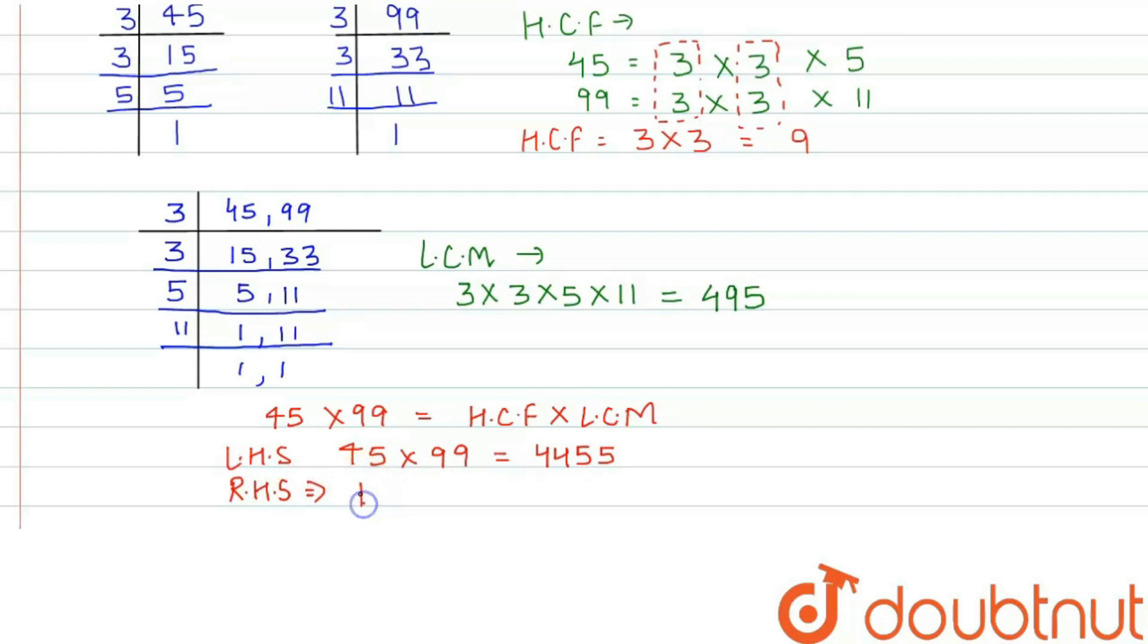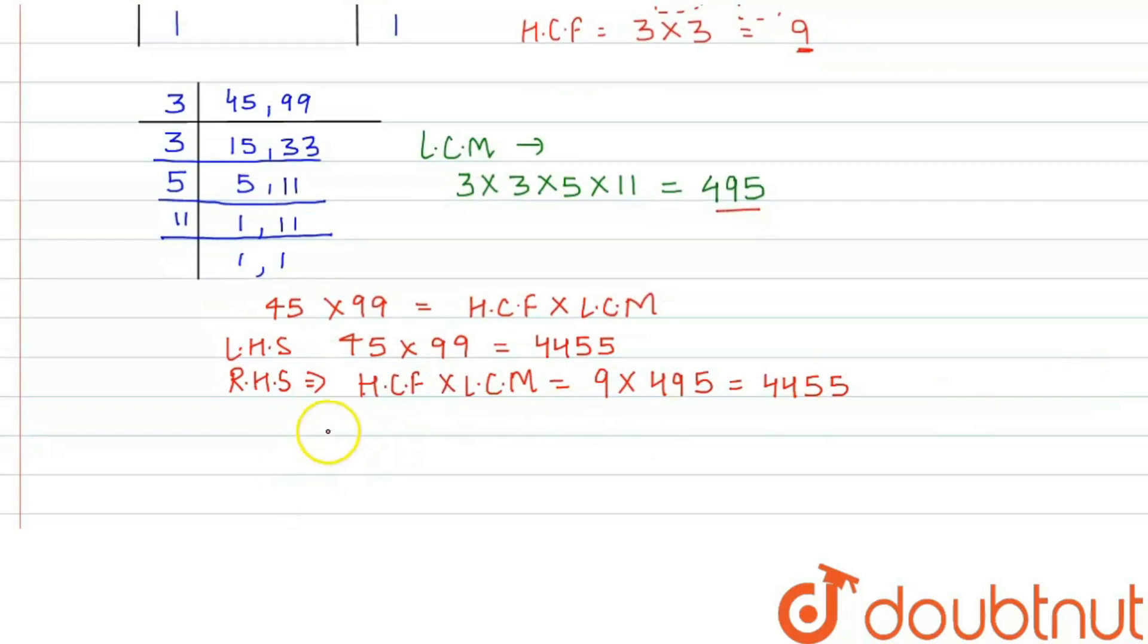Now we will find the right hand side. In right hand side we have HCF into LCM. So HCF is 9 and LCM is 495. So multiply 495 with 9, we get 4455. Now here you can see that left hand side is equal to right hand side.